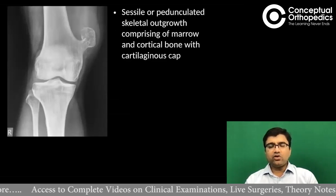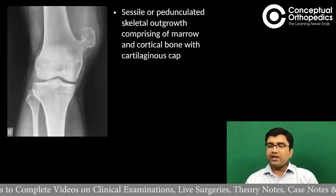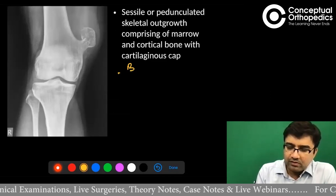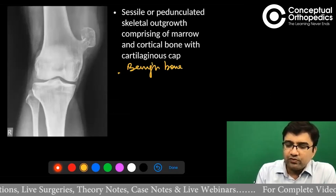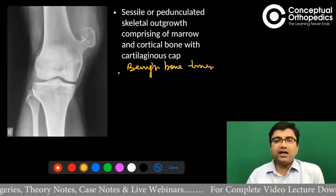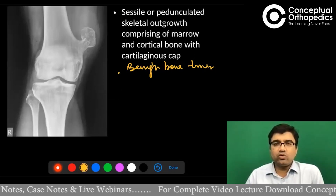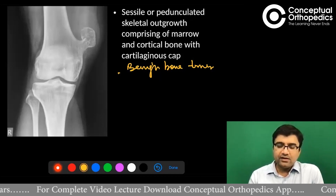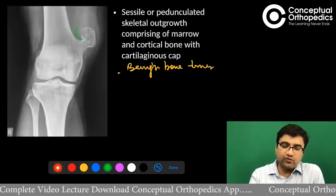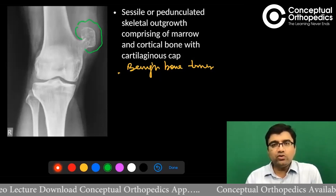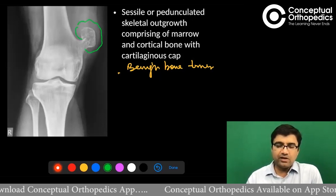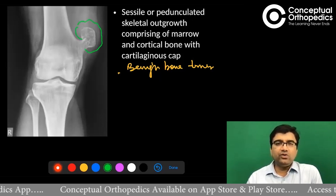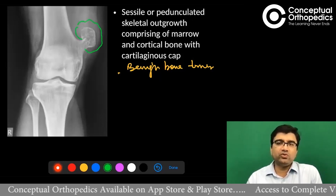By definition, osteochondroma is a benign bone tumor. It is classified as a benign bone tumor which grows as a sessile or pedunculated skeletal outgrowth. The characteristic is that it is a bone tumor which has a cartilaginous cap over it. You can see the bony outgrowth, and there is a layer of cartilage over it, but you are not able to see it on x-rays because cartilage is lucent. On MRI you are able to see it better.